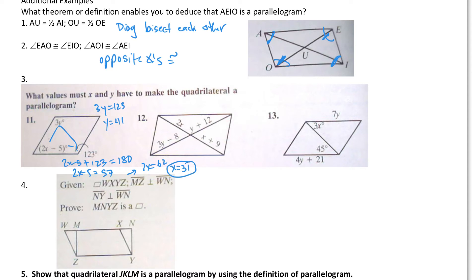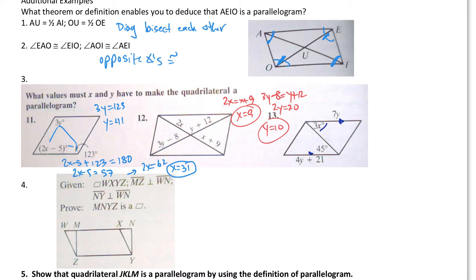For number 2, the diagonals would have to bisect each other, so I can say 2X equals X plus 9, and 3Y minus 8 equals Y plus 12. Solving each one: bring the X over, you get X equals 9. Bring a Y over, you get 2Y equals 20, so Y is 10. For the last one, those sides have to be parallel, so 3X equals 45, giving X equals 15. And 7Y equals 4Y plus 21, so 3Y equals 21, and Y equals 7.